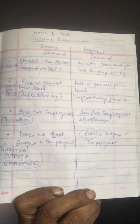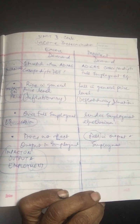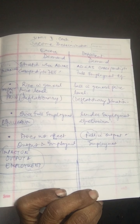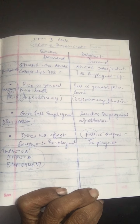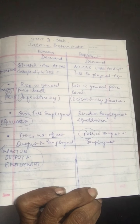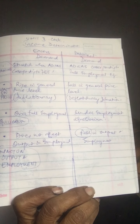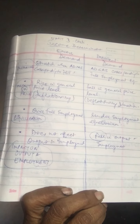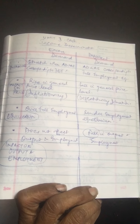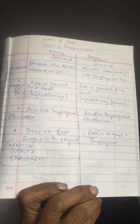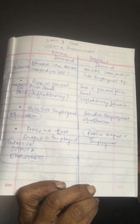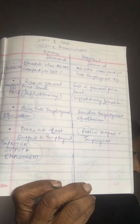A quick comparison between excess demand and deficient demand: in terms of meaning, at full employment, excess demand means aggregate demand is more than aggregate supply. Regarding impact on prices, excess demand leads to inflation — a rise in the general price level — while deficient demand leads to deflation, a fall in the general price level. Regarding equilibrium, excess demand represents over-full employment equilibrium, while deficient demand represents underemployment equilibrium.